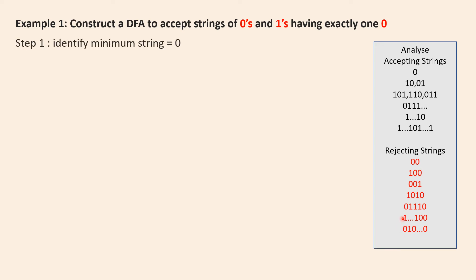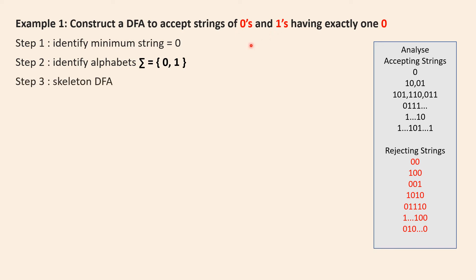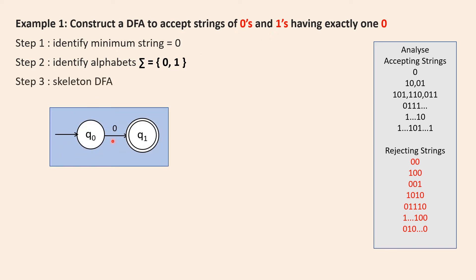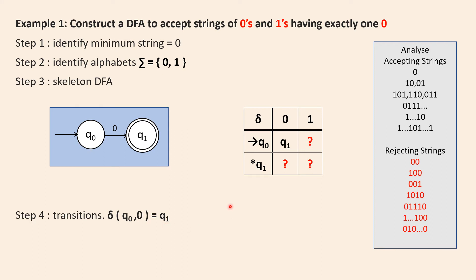Step one is to identify the minimum string. The minimum string is just one zero, which has to be in the final state. The input alphabets are zero and one. The skeleton to accept zero is q-naught on input zero goes to q1. The transition is delta of q-naught on input zero going to q1. In the transition table, q-naught is the start state and q1 is the final state, where q-naught on zero goes to q1.